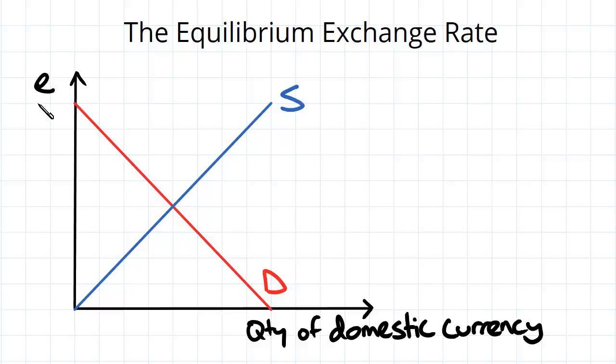So we've got value of the domestic currency on the y-axis and quantity of the domestic currency on the x-axis. So it's a usual sort of price-quantity kind of thing.